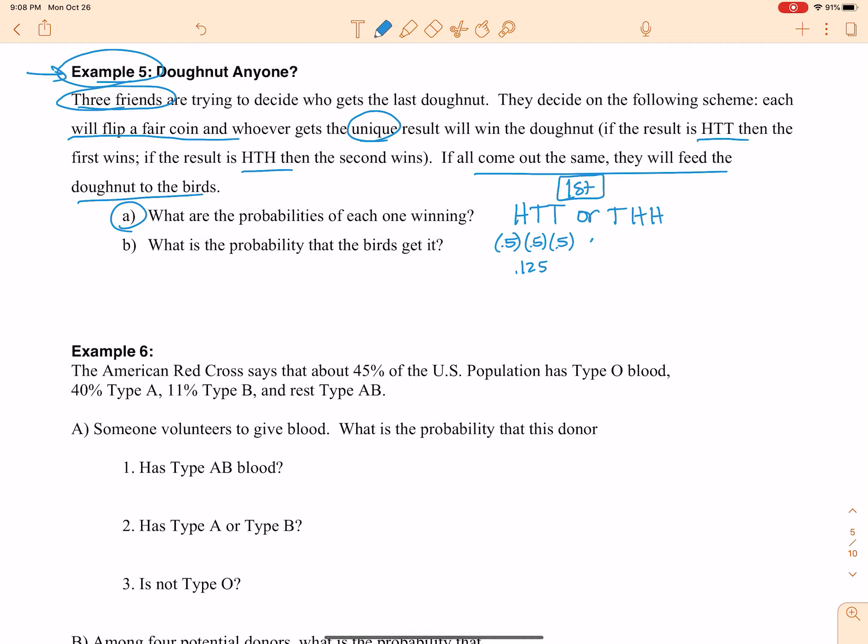Now the other way that can happen is tails, heads, heads. So that's 0.5 times 0.5 times 0.5. And again, that's 0.125. So that first person can win this way or this way. So the probability of any single person winning is 0.125 plus 0.125, which is 0.25.